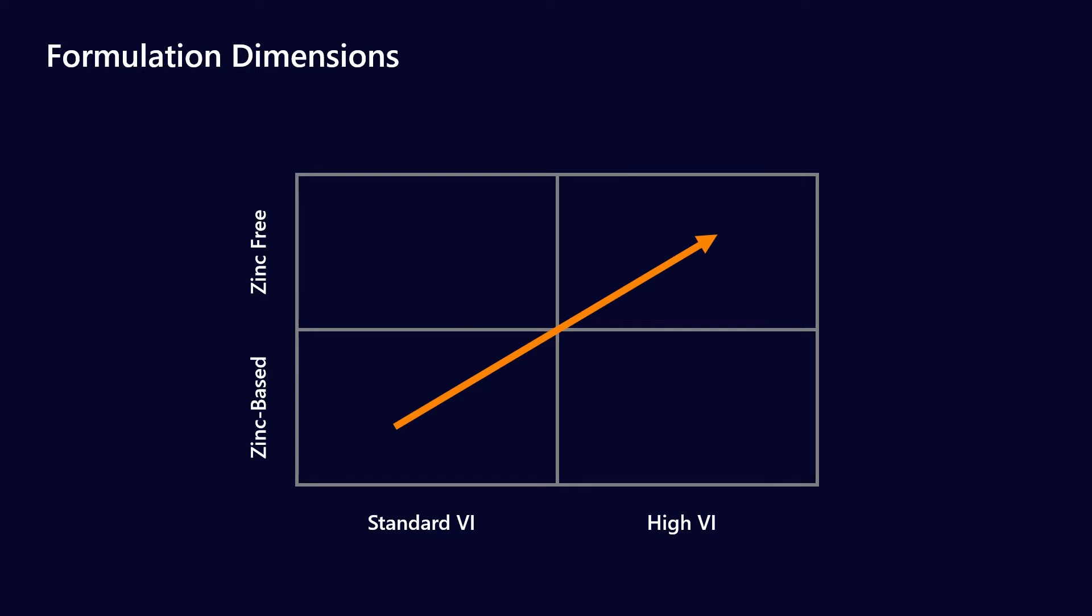As you travel from the bottom left to the bottom right the formulation gets a lot more difficult to achieve some of the OEM requirements. So you can imagine once you can't use zinc based anti-wear additives you've got to look to other alternatives. These are often more expensive but it also makes it more difficult to meet the criteria of let's say the Bosch Rexroth test.